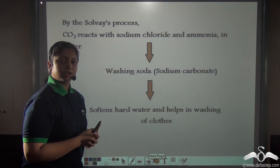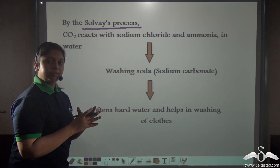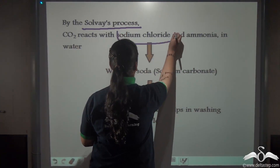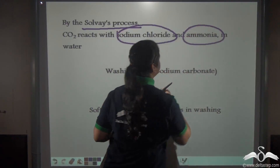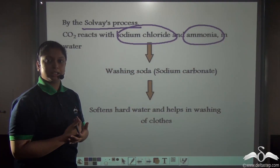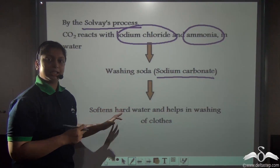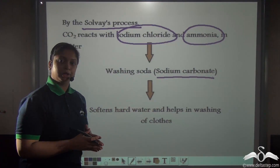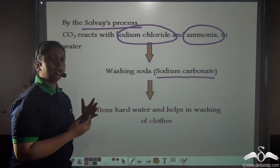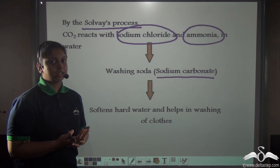In the laboratory, how is washing soda made? The process is known as the Solvay process. By the Solvay process, carbon dioxide is reacted with two chemicals — sodium chloride and ammonia — in the presence of water to form washing soda, chemically known as sodium carbonate. This washing soda is very helpful for softening hard water, which helps in washing clothes. For very dirty clothes, washing powder containing powdered soap and other chemicals is used.